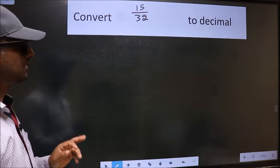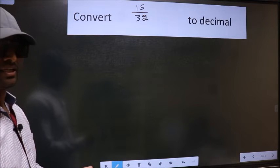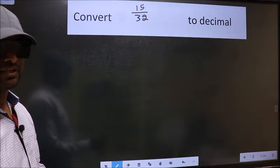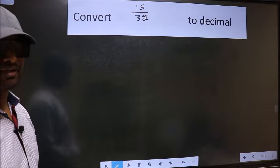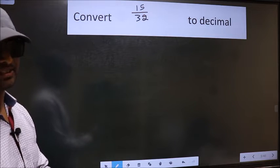Convert 15 by 32 to decimal. To convert to decimal, we should divide it. And to divide, we should frame it in this way.